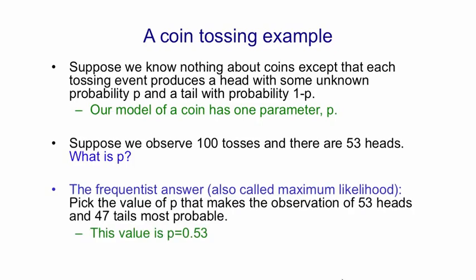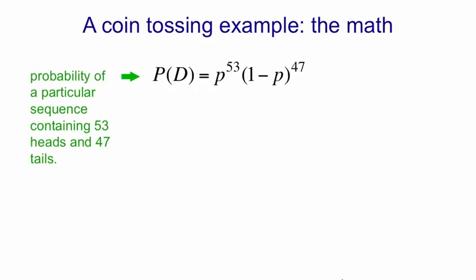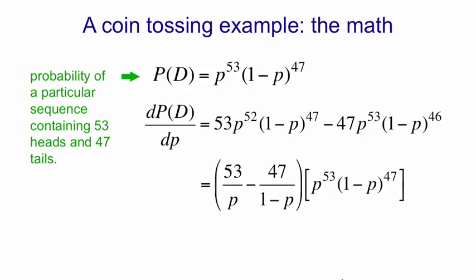The frequentist answer, which is also called maximum likelihood, is to pick the value of p that makes the observations most probable. And that value of p is 0.53. It's not obvious that's true. Let's derive that. So the probability of a particular sequence that contains 53 heads and 47 tails could be written out by writing down p every time you toss a head, and 1 minus p every time you toss a tail. And then if we collect all the p's together and all the 1 minus p's together, we get p to the 53 and 1 minus p to the 47. If we now ask how does the probability of observing that data depend on p, we can differentiate with respect to p, and we get the expression shown here. And if we then set that derivative to 0, we discover that the probability of the data is maximized by setting p to be 0.53. So that's maximum likelihood.